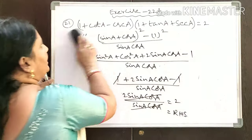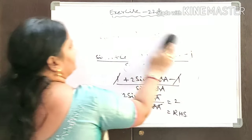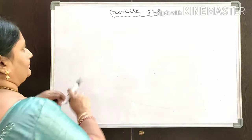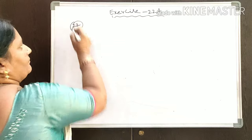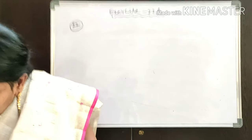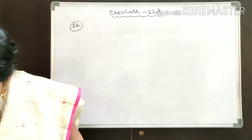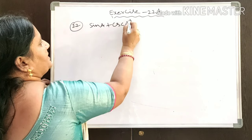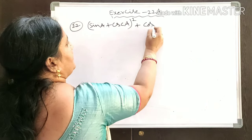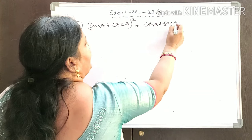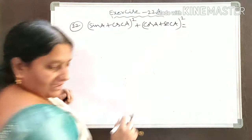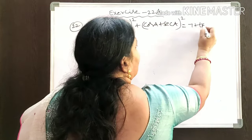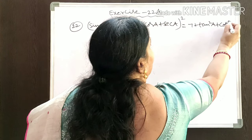Now problem number 22: show that (sinA + cosecA)² + (cosA + secA)² is equal to 7 + tan²A + cot²A.